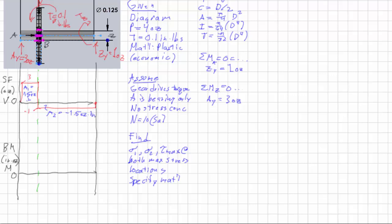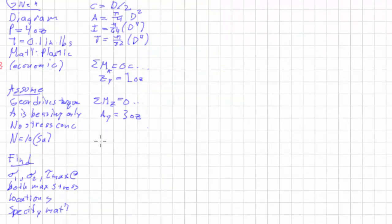And so now we have what we need for our bending moment. This goes up 1.5. And then it linearly goes down, back down to zero. It goes up 1.5, then down 1.5. So we have our Vmax equals 3 ounces. And our Mmax equals 1.5 inch ounces.